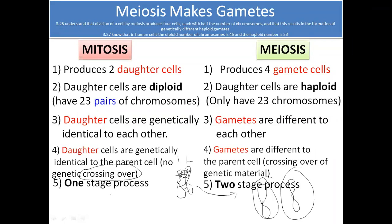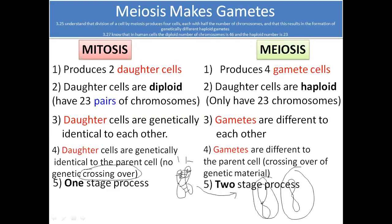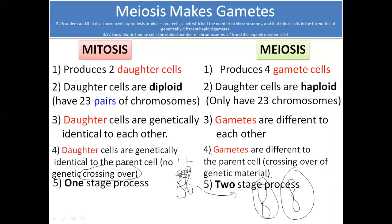Mitosis is a one-stage process while meiosis is a two-stage process. Mitosis is one stage because 46 chromosomes in a cell gives you two cells each with 46. Meiosis is two stages: meiosis I and meiosis II. In meiosis I, 46 converts into 23 and 23 — two cells form. Then in meiosis II, those two cells with 23 chromosomes undergo another division and give you four cells. Meiosis occurs only in reproductive organs — testes and ovaries — because there are specialized stem cells there that have the ability to produce sperm and ovum.